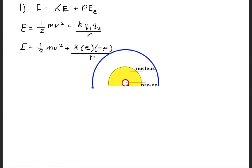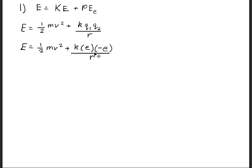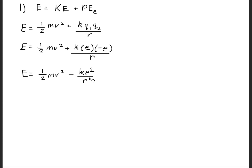Recall from the diagram that for the hydrogen atom there are only two elementary particles: the proton and the electron. We give those the symbol e. The proton has a positive charge, whereas the electron has a negative charge. Substituting those symbols for Q and simplifying, the energy equals one-half mv squared minus the Coulomb constant times the elementary charge squared divided by R.